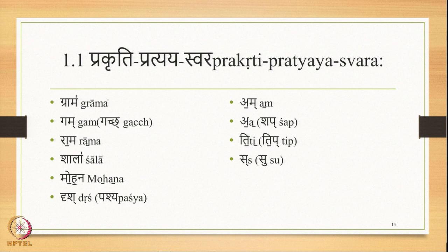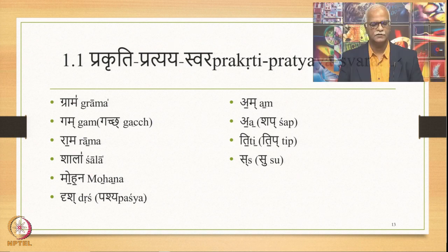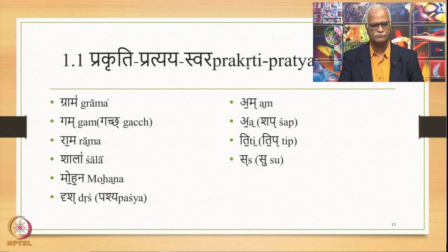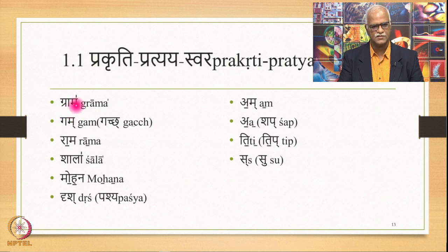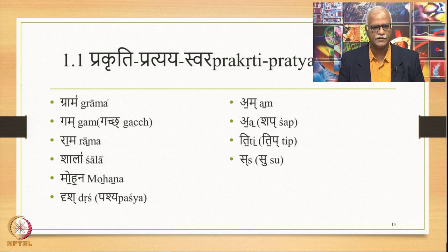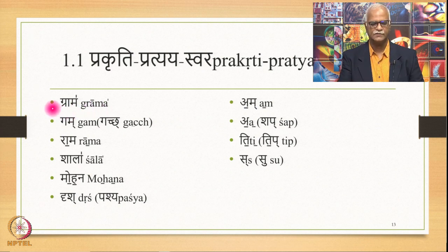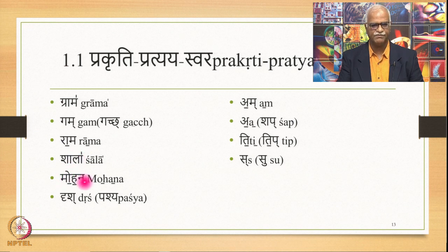We have the Prakriti-Pratyayaswara which is the basic unit — the grammatical atom, the Anu. The word Grama is initially accented. The system we use belongs to the Rig Vedic system in which the Udathaswara, the accent, is not marked by any symbol. If one vowel is Udathaswara, the rest is Anudathaswara, non-accented. The Anudathaswara that comes immediately after Udathaswara gets a vertical bar on top and is called Swarita. In Gama there is only one vowel, and only vowels get an accent, not consonants. So: Grama has initial Udathaswara, Rama has final vowel as Udathaswara, Shala has first vowel as Udathaswara, Mohana has final vowel as Udathaswara.